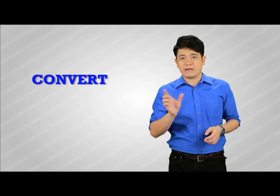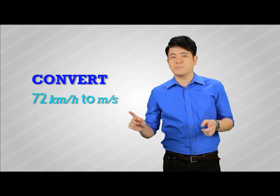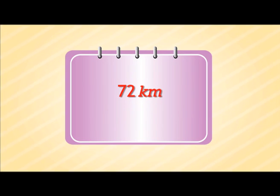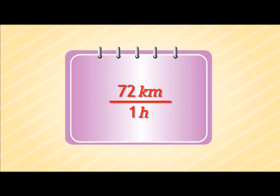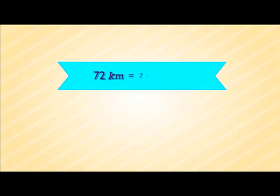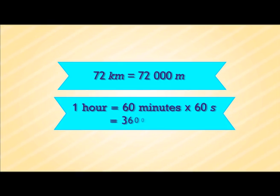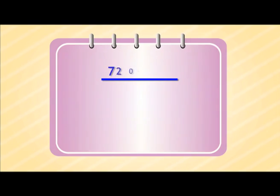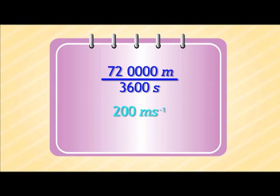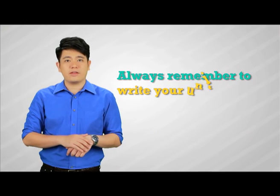Let's try something a little more difficult. Please convert 72 km per hour to meters per second. First, split the 72 km per hour into 72 km over 1 hour. I'm sure you know 72 km is 72,000 meters, and 1 hour is 60 minutes times 60 seconds, which is 3,600 seconds. Simplifying, you will get 200 meters per second. Always remember to write your units. In the exam, if your number is correct but your unit is not there, it is still marked wrong.